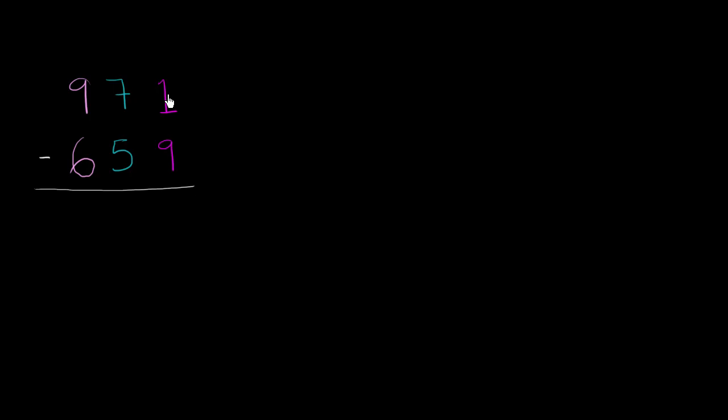And to understand that a little bit better, let me rewrite these two numbers. Let me expand it out. So this 9 is in the hundreds place, so it represents 900. The 7 is in the tens place, so it represents 7 tens. And then this 1 is in the ones place, so it just represents 1.